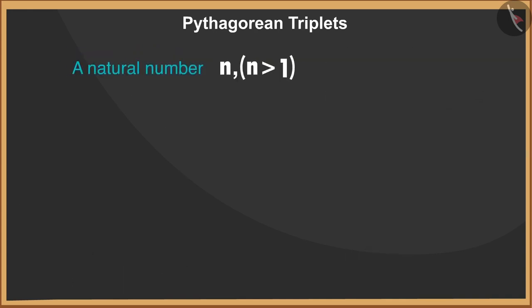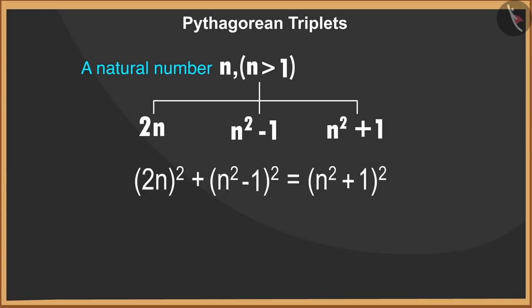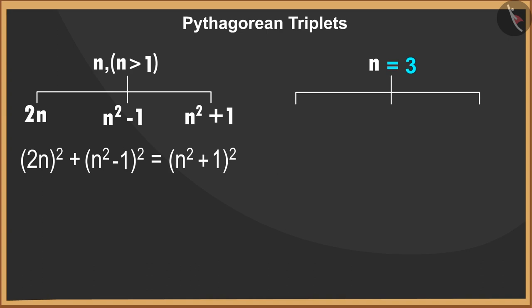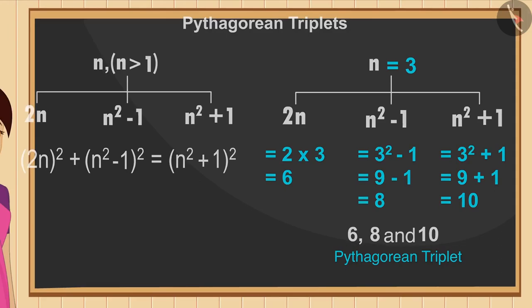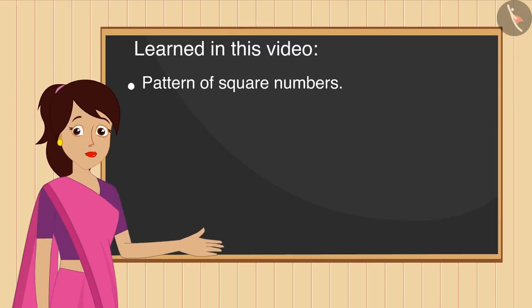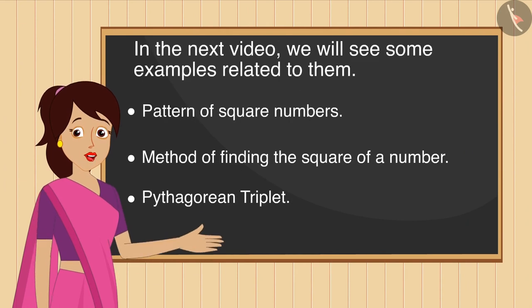We observe that for any natural number n greater than one, the numbers 2n, n² − 1, and n² + 1 form a Pythagorean triplet. For example, for n = 3, the numbers 6, 8, and 10 form a Pythagorean triplet. In today's video we learned about the pattern of square numbers, the method of finding the square of a number, and the Pythagorean triplet. In the next video we will see some examples related to them.